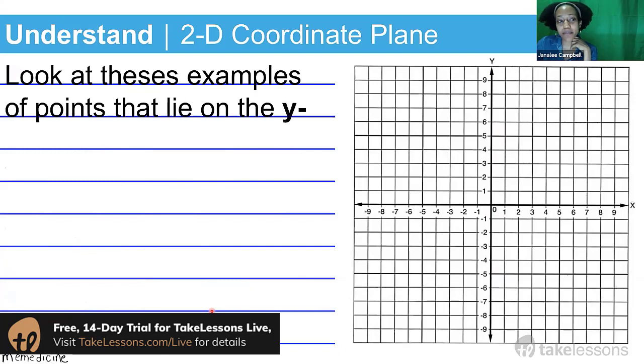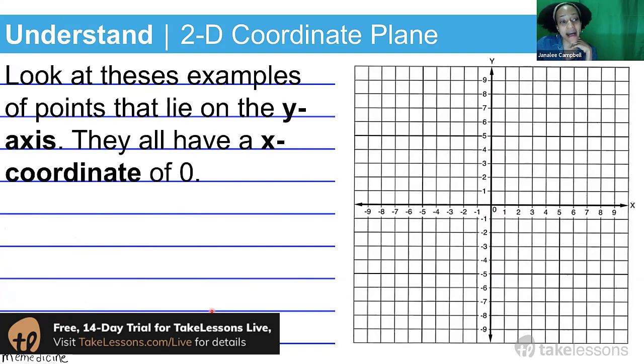Look at these examples of points that lie on the y-axis. They all have an x-coordinate value of zero. First you have (0,2). The x-coordinate has a value of zero because you did not move to the right nor did you move to the left, but you did move up two units vertically, so you have a vertical position of two.